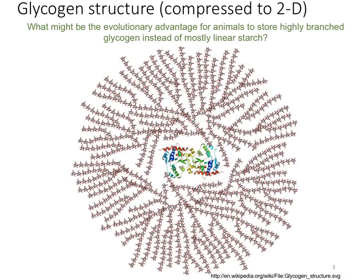What might be the evolutionary advantage for animals to store their glucose as highly branched glycogen instead of the linear polymer of starch, which is how plants store their glucose? Well, when the glucose from glycogen is released, it's off the ends. When you have a highly branched structure, there are far more ends to release lots of glucose quickly. We have to move and run. Plants are stationary — they don't need to release their glucose quickly.